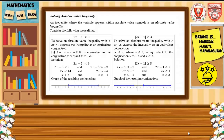It is equivalent to the conjunction: x is less than or equal to a, and x is greater than or equal to negative a. Here is the solution, and the graph of the resulting conjunction is shown in the graph below.